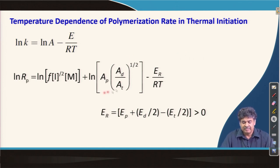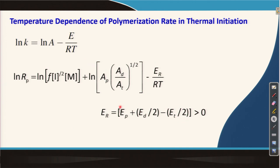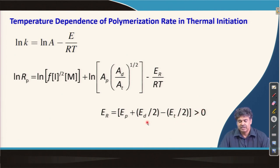We showed in the last lecture that the rate of polymerization can be expressed using the Arrhenius equation, where E_r is the composite activation energy combining contributions from propagation, decomposition, and termination. This composite value is positive, meaning that with increasing temperature, the reaction rate for thermal initiation actually goes up.